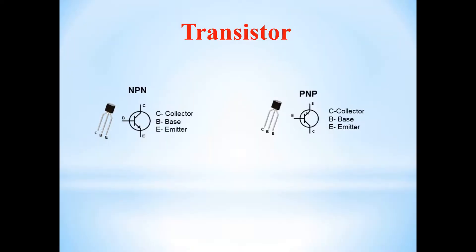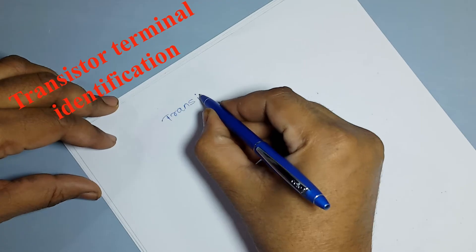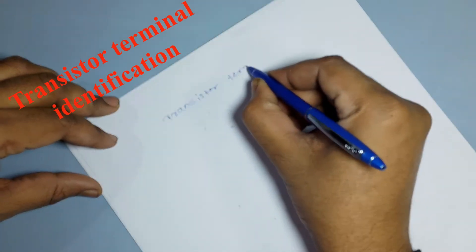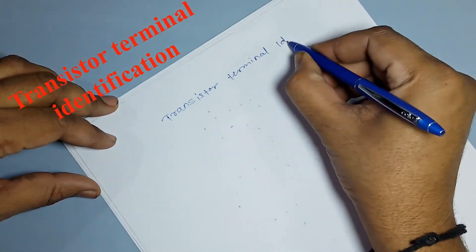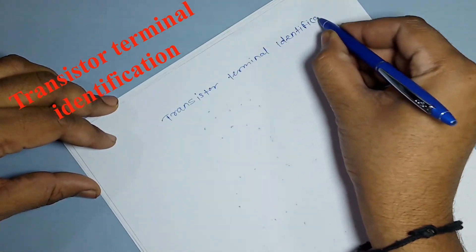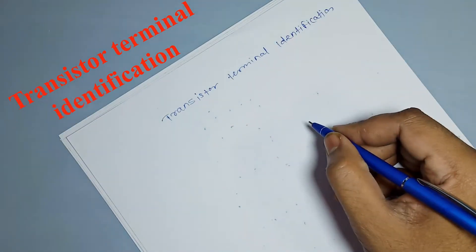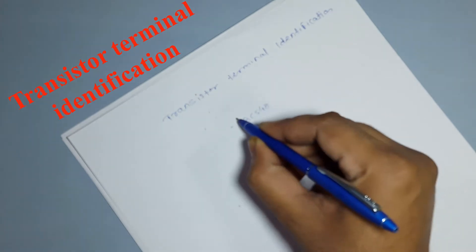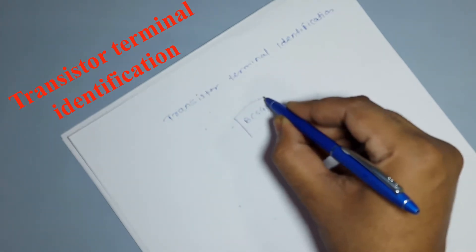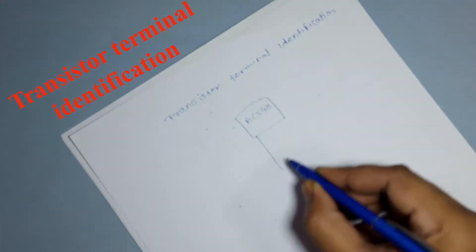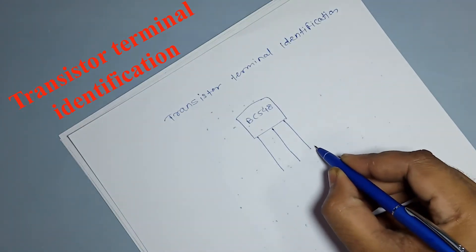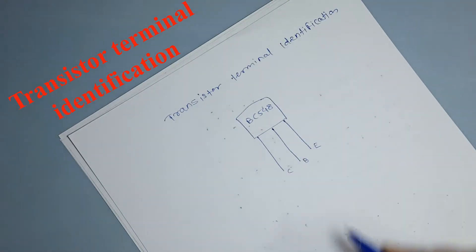Transistor terminal identification: NPN and PNP. Transistor is a semiconductor device used to amplify or switch electronic signals and electrical power.